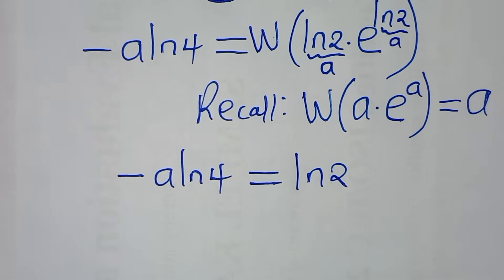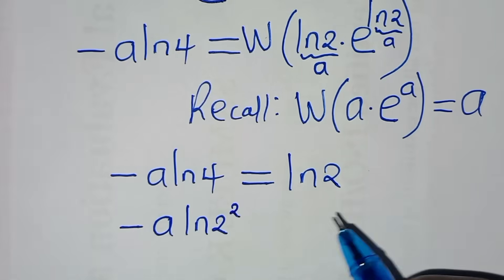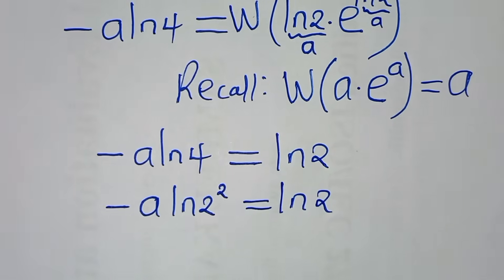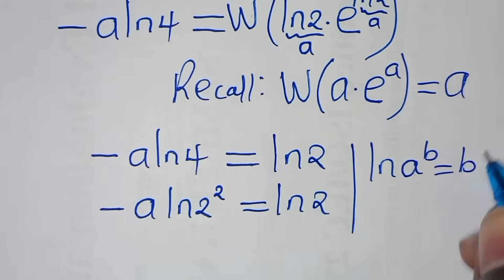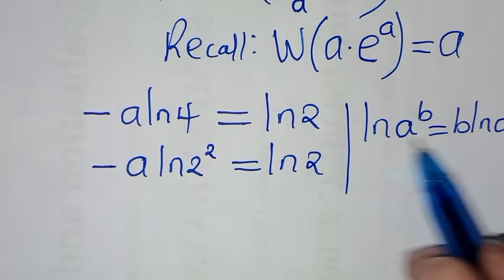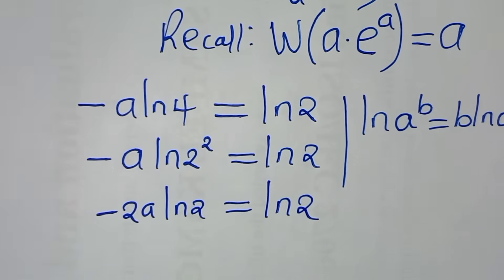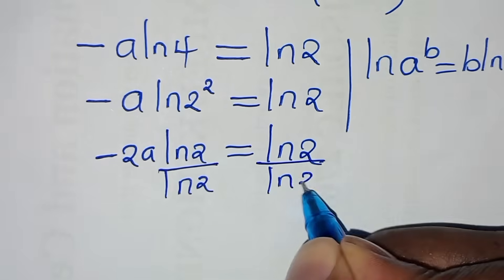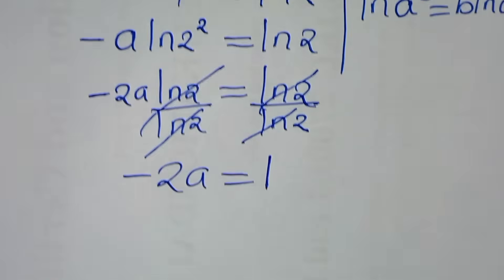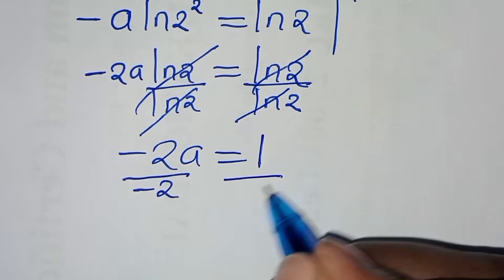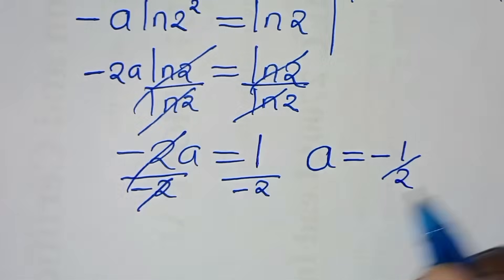We can express ln 4 as ln of 2 squared, which equals 2 ln 2 by the logarithm power rule. So we have: minus a times 2 ln 2 equals ln 2, which simplifies to minus 2a equals 1 after dividing both sides by ln 2. Dividing both sides by minus 2, we get a equals minus one-half.